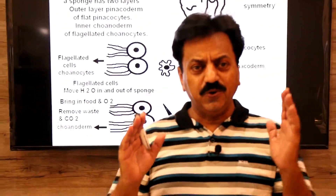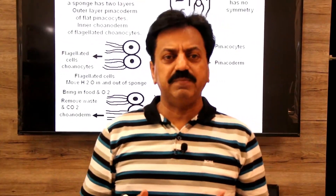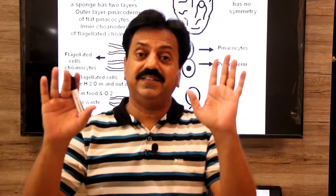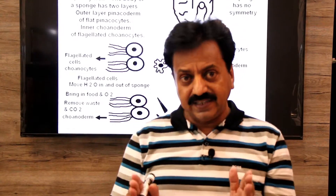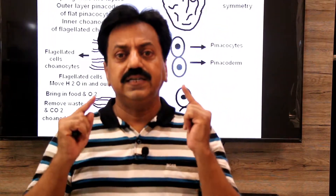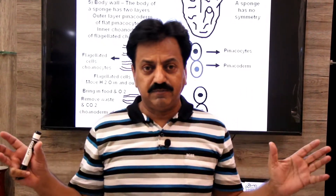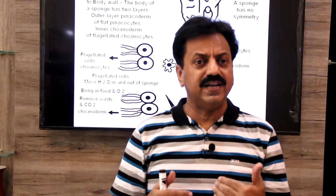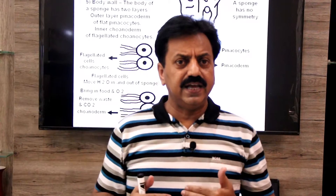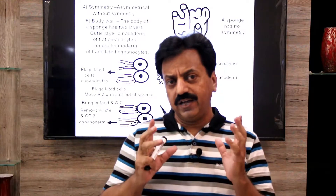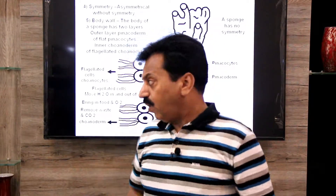The two layers in the sponge body are not ectoderm and not endoderm. Ectoderm is a layer made up of tissues, endoderm is a layer made up of tissues, but in sponges there are no tissues. So these are cellular layers — the outer layer pinacoderm made up of pinacocytes, and the inner layer choanoderm made up of choanocytes.